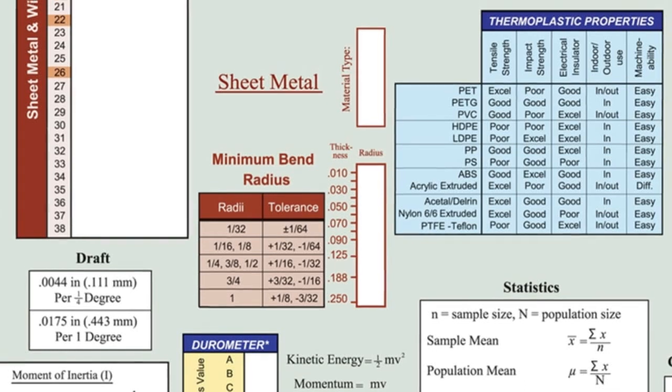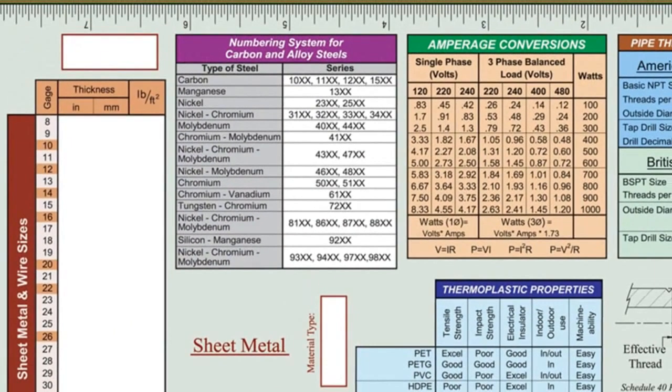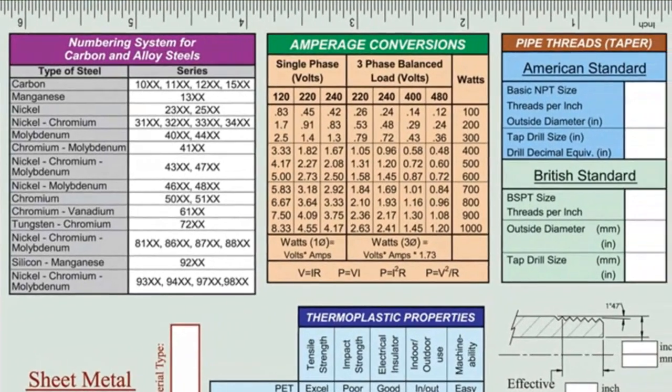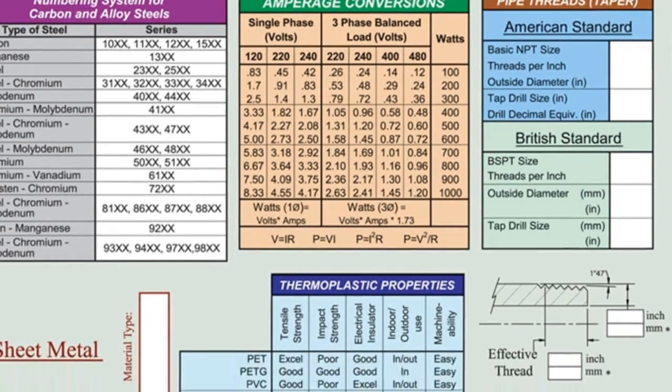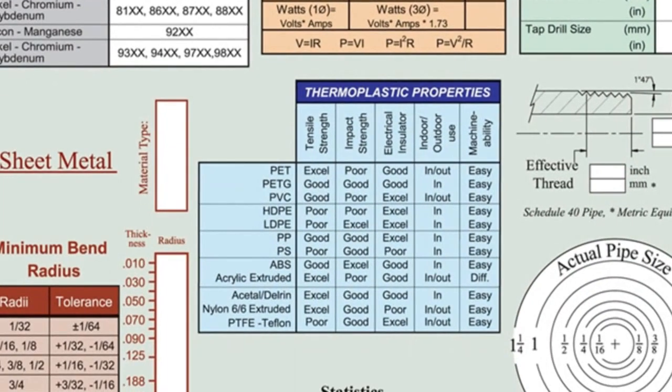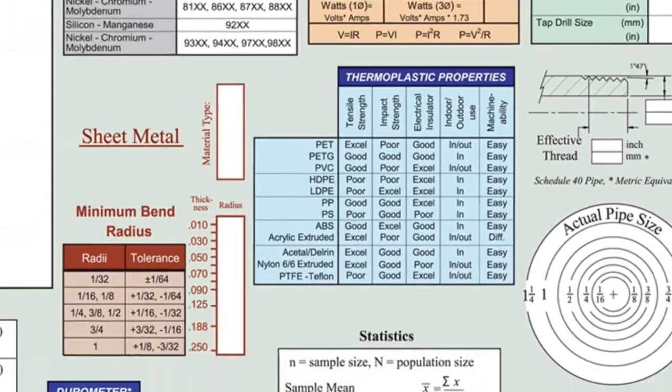A table with a numbering system for carbon and alloy steels is also included. Tables in the upper right list pipe threads for American and British standards, an amperage conversion chart that includes common electrical formulas, and a reference for thermoplastic properties of common plastics and characteristics of each.